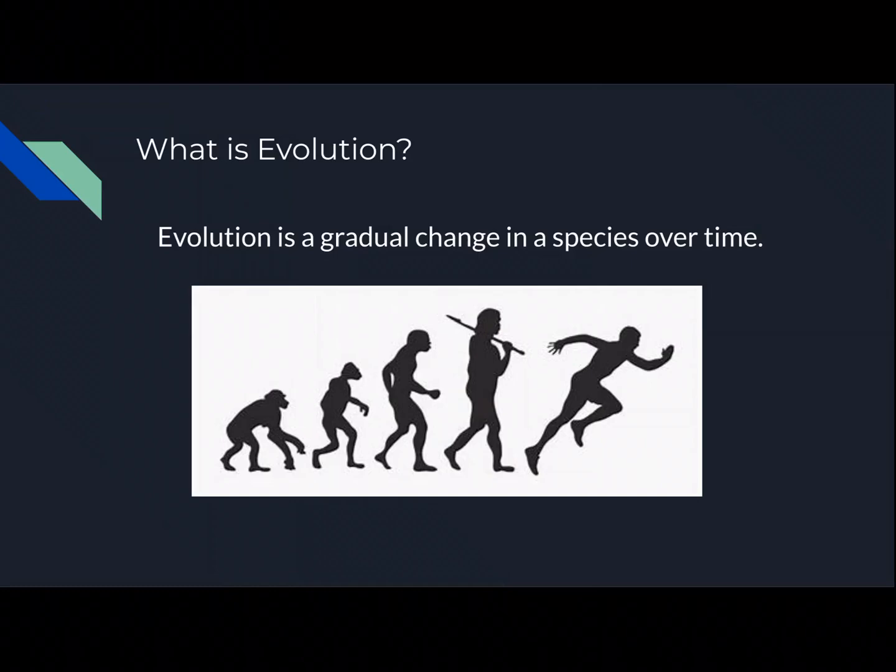What is evolution? Evolution is a gradual change in a species over time, as shown below. On the left, there was a monkey who existed millions of years ago. As time passed, they evolved into the humans that exist today.